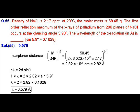To find the wavelength we will apply Bragg's law, but we also need the value of interplanar distance d. So first we will calculate the interplanar distance d using the provided data, that is density and molecular mass of the compound. The interplanar distance is given as M divided by 2 times Avogadro's number times density, whole raised to the power 1 by 3.